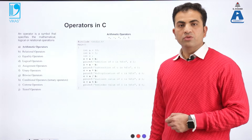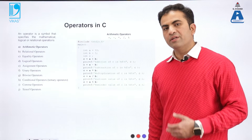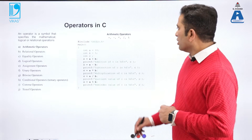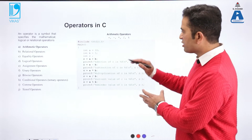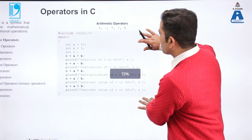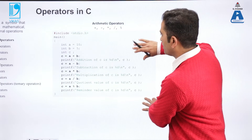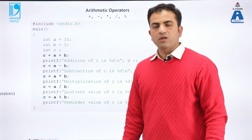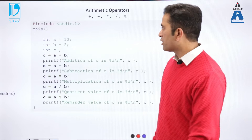These operators are used for arithmetic expressions like simple addition, subtraction, multiplication, division, or to find the remainder of any equation. How to write these operators in C programming? Here is a very small C program to explain the arithmetic operators and how we are using them in C programming language.